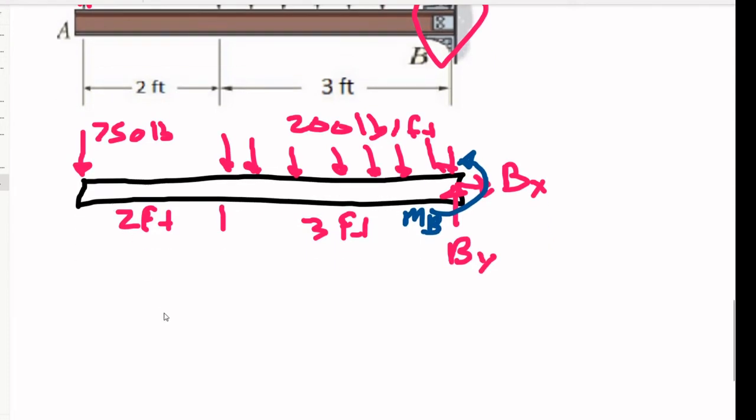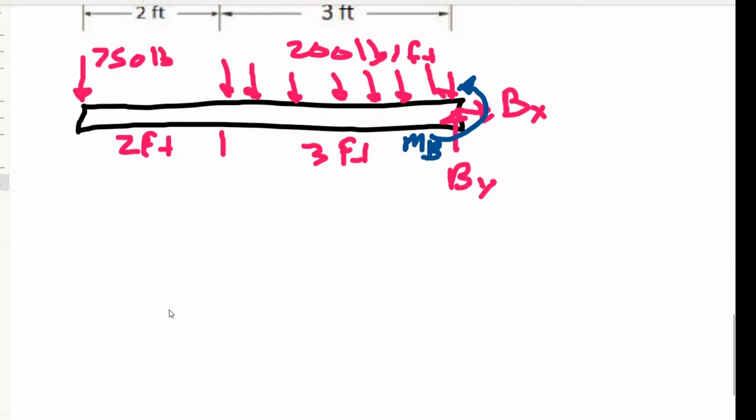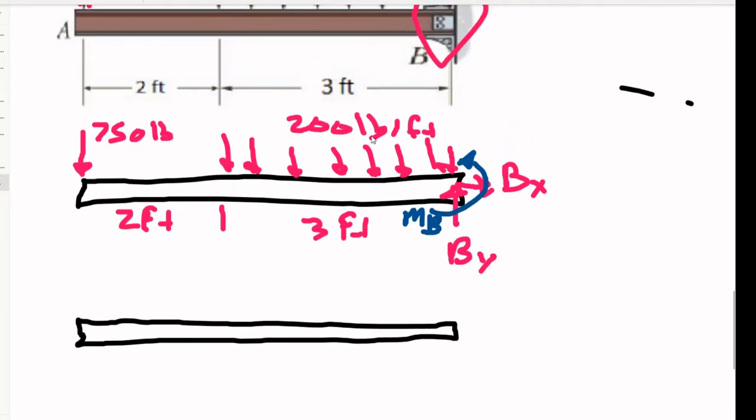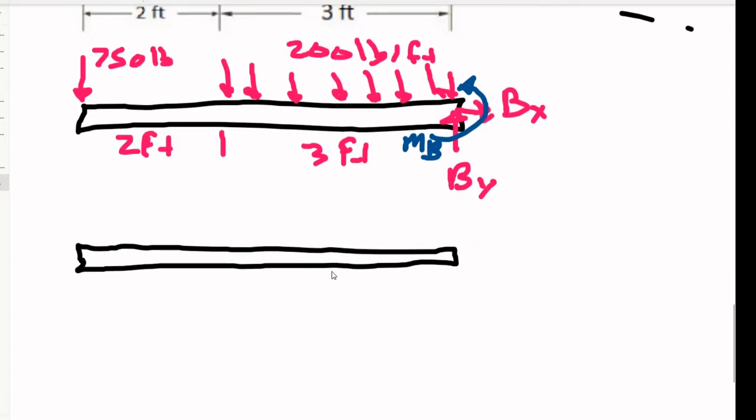Okay, so first step would be to take our distributed load and replace it with an equivalent concentrated point load. I think I'm starting to get the hang of drawing a straight line on this tablet thing. Okay, so 200 pounds per foot, three feet long. That means we have a 600 pound force. And we know that the location of that 600 pound force is going to be located smack dab in the middle of the uniform section. That'll be 1.5 feet. And we still got our 750 here.